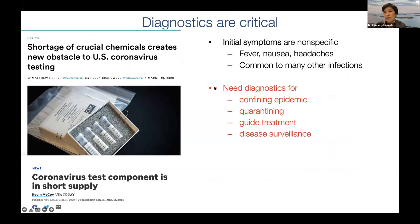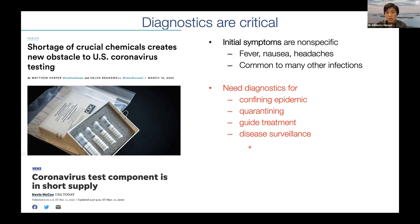What we're interested in is making diagnostics. We already know their importance — you need a tool to make a call as to what somebody has been infected with. Many of those diseases have really similar symptoms, like fever, nausea, or headaches, common to lots of other diseases. So you need that tool to properly confine an epidemic, quarantine patients if there's human-to-human transmission, guide treatment, and create maps of where diseases are spreading for disease surveillance.